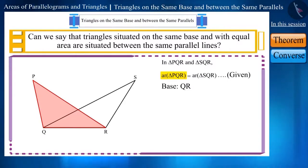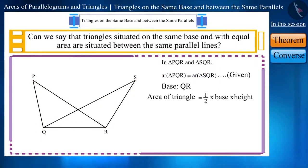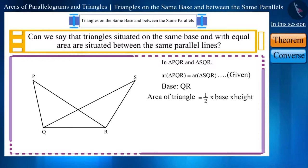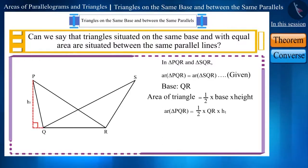Let's discuss this. The area of triangle PQR and triangle SQR is equal. If we use the formula for the area of a triangle, we get: 1/2 multiplied by QR multiplied by height, where the base of triangle PQR is QR. No information is given about the height, so let's take it as H1.